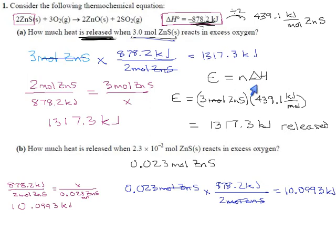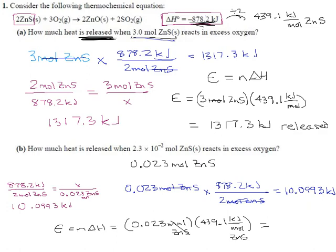And finally, if you use the formula here, we've already got our delta H. We know it's 439.1. We found it before. So we can do energy equals n delta H. N is 0.023 moles. Our delta H is 439.1 kilojoules per mole. I should be saying moles of zinc sulfide. Sorry, I'm kind of a stickler for that. I think it's helpful and important, especially in complicated questions. Moles of zinc sulfide cancel out. And when that's over, you should again get 10.0993 kJ.